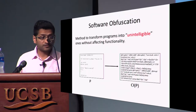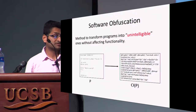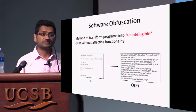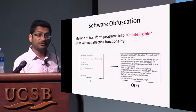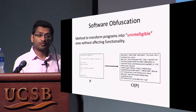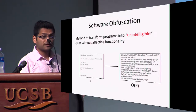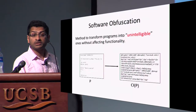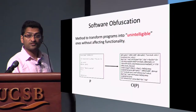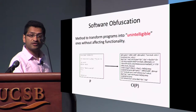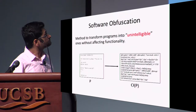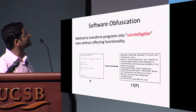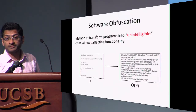The goal of software obfuscation is to make computer programs unintelligible, but without affecting their functionality. So let's say you have a program P written in your favorite programming language. You would like to obfuscate the program so that this obfuscated version works just like the original one — you could execute it on your computer just as you could have executed the original program P. But you want this obfuscated version to hide the secrets that were embedded inside the original program P.